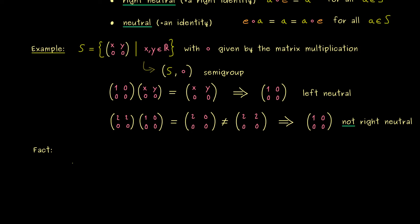So here let's assume that we have a left identity and a right identity. And let's call the left neutral element E and the right neutral element E tilde. So this means we have these two equalities here for every A and B in S. In particular the first one should also hold if we choose E tilde for A.